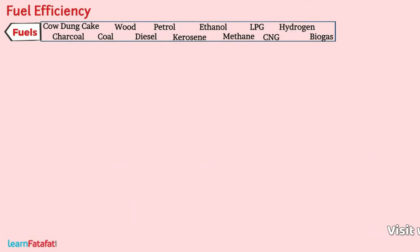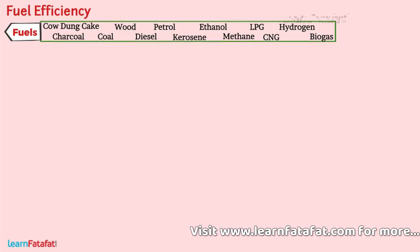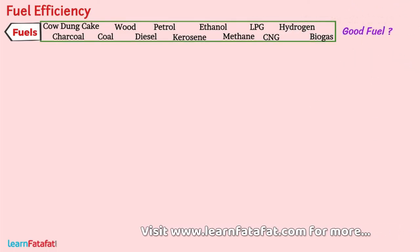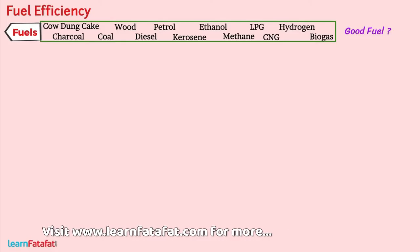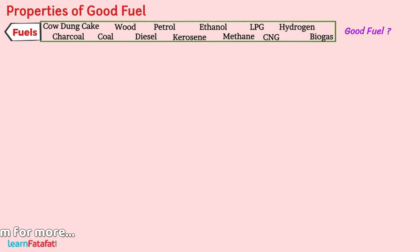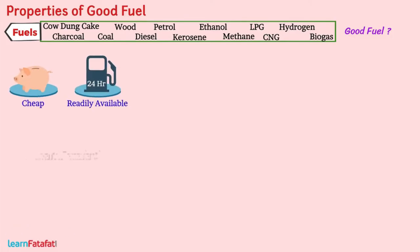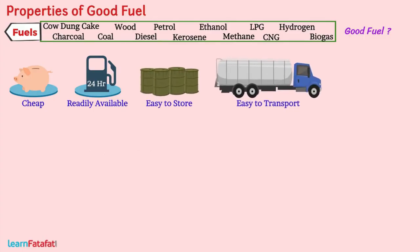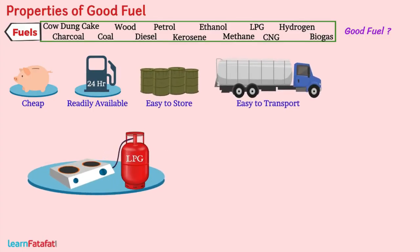There are a large number of fuels. However, we have to choose a good fuel. A good fuel can be selected based on the following properties: it is cheap and readily available, it is easy to store and transport, and it catches fire easily and burns with a moderate rate and produces a high amount of energy.